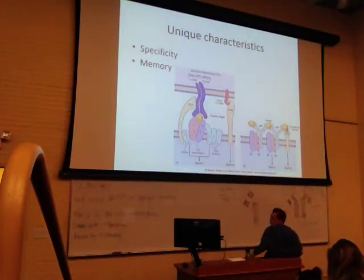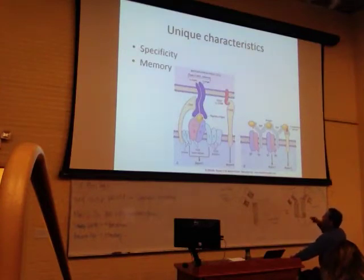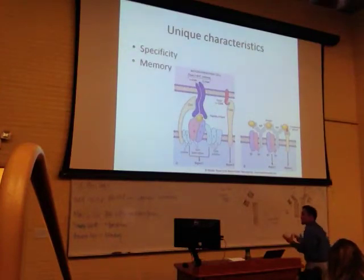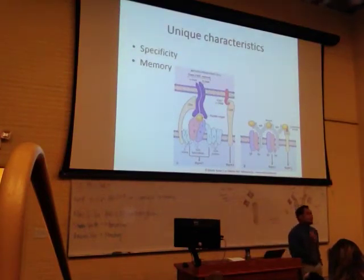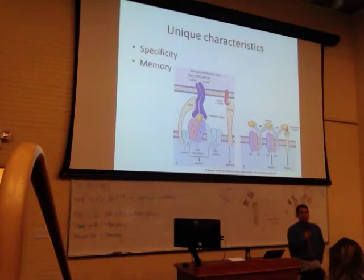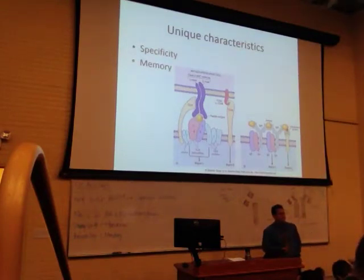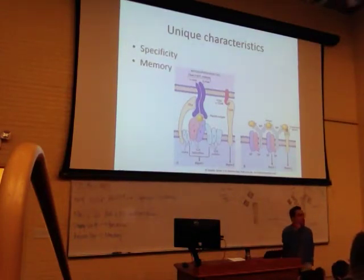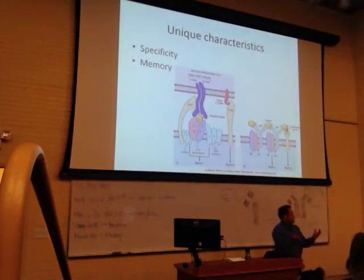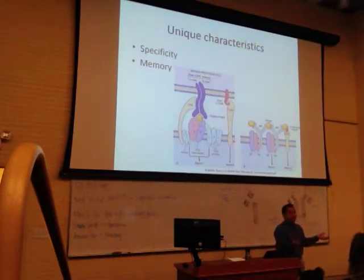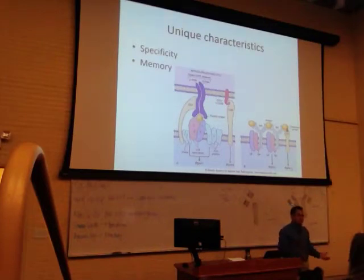This is specificity — T cells are highly specific and highly regulated. Later in the lecture, we'll see there's memory associated with them. There are memory T cells and memory B cells that adapt the response the second time you see the antigen. Usually it means the response is heightened and faster.